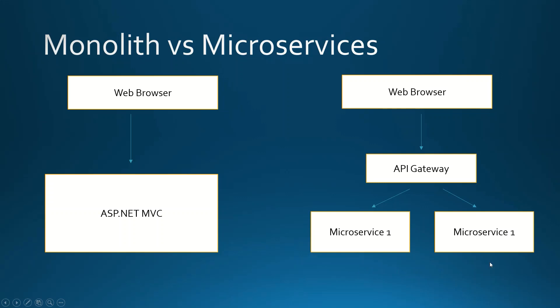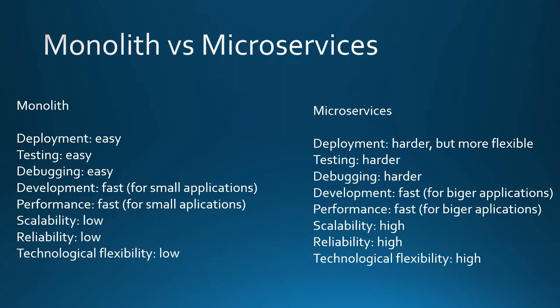The microservices can also communicate between each other, usually using message queues like RabbitMQ for example, and in some scenarios also HTTP requests, but message queues are more popular.